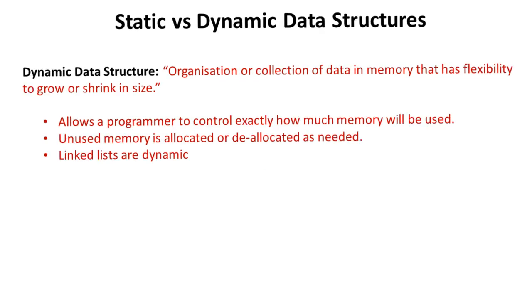Opposite to this we have the dynamic data structure. These are data structures whose organisation or collection of data in memory is flexible, in other words it can grow and shrink. These allow a programmer to control exactly how much memory will be used. Unused memory can be allocated or deallocated while the program is running as needed. A linked list is an example of a dynamic data structure.